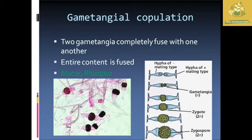Now we are going to see about gametangial copulation. This is where two different gametangia completely fuse to form one another. The entire content is fused and used to create new structures. This type of gametangial copulation is said to occur in Mucor as well as Rhizopus.